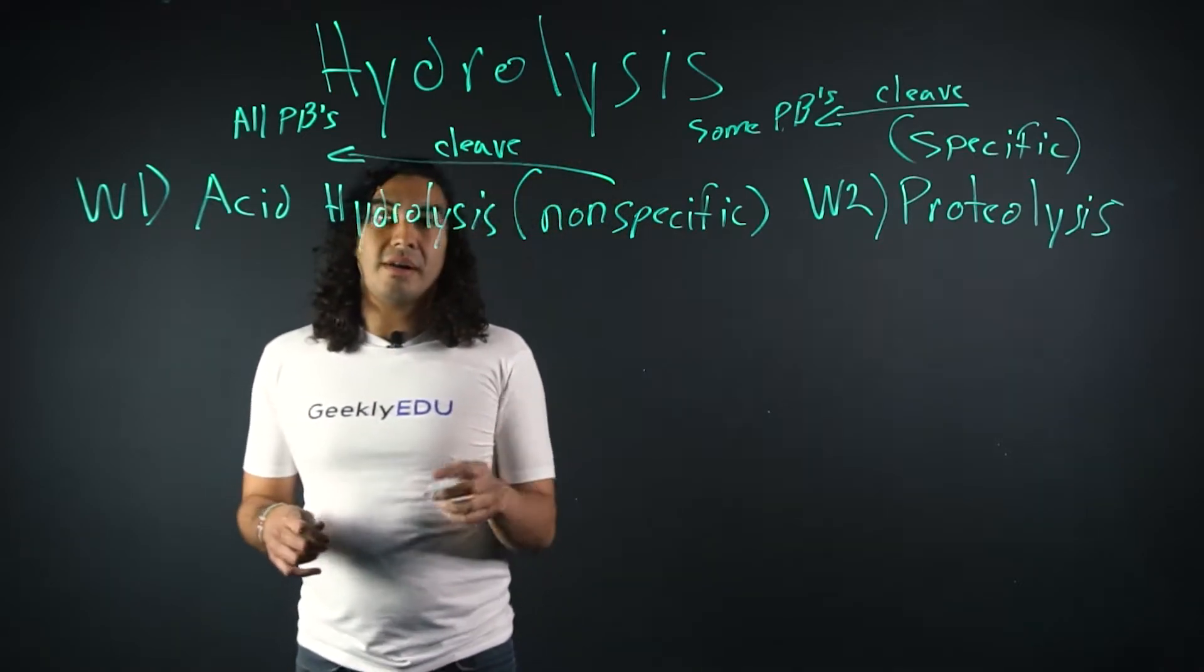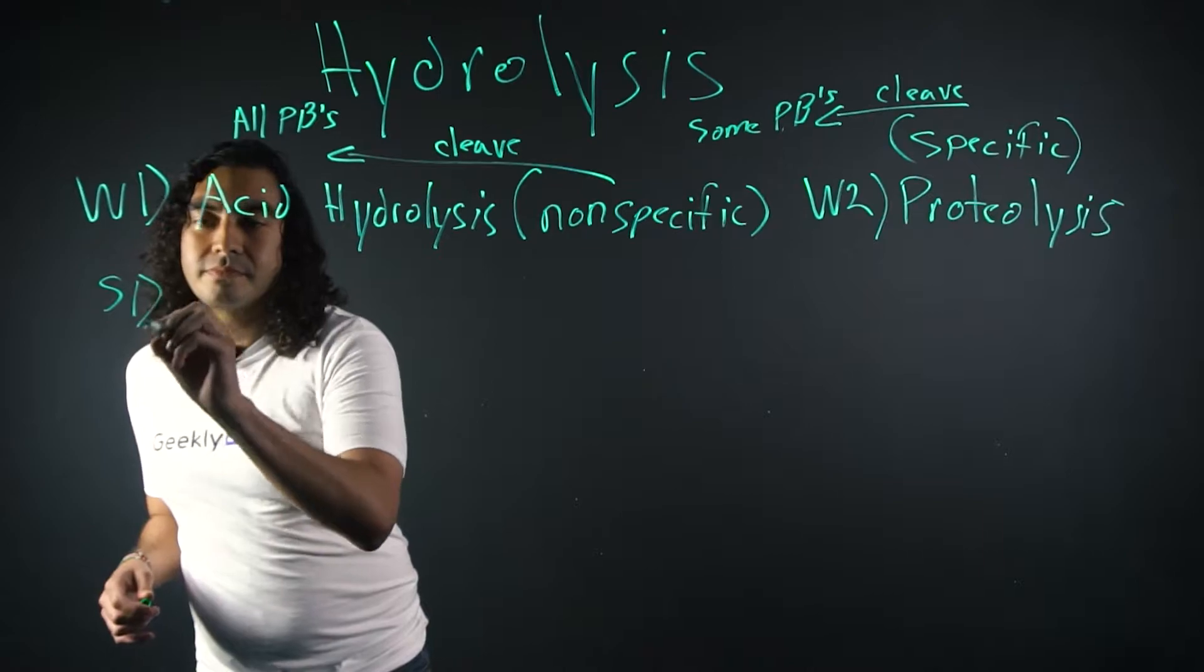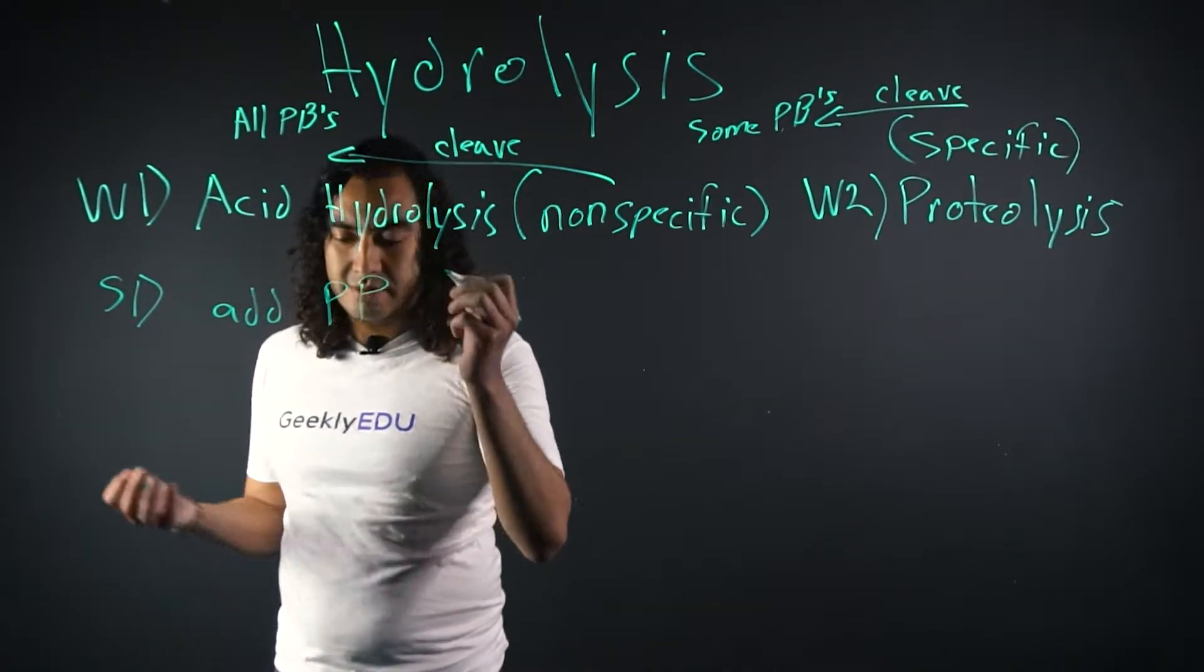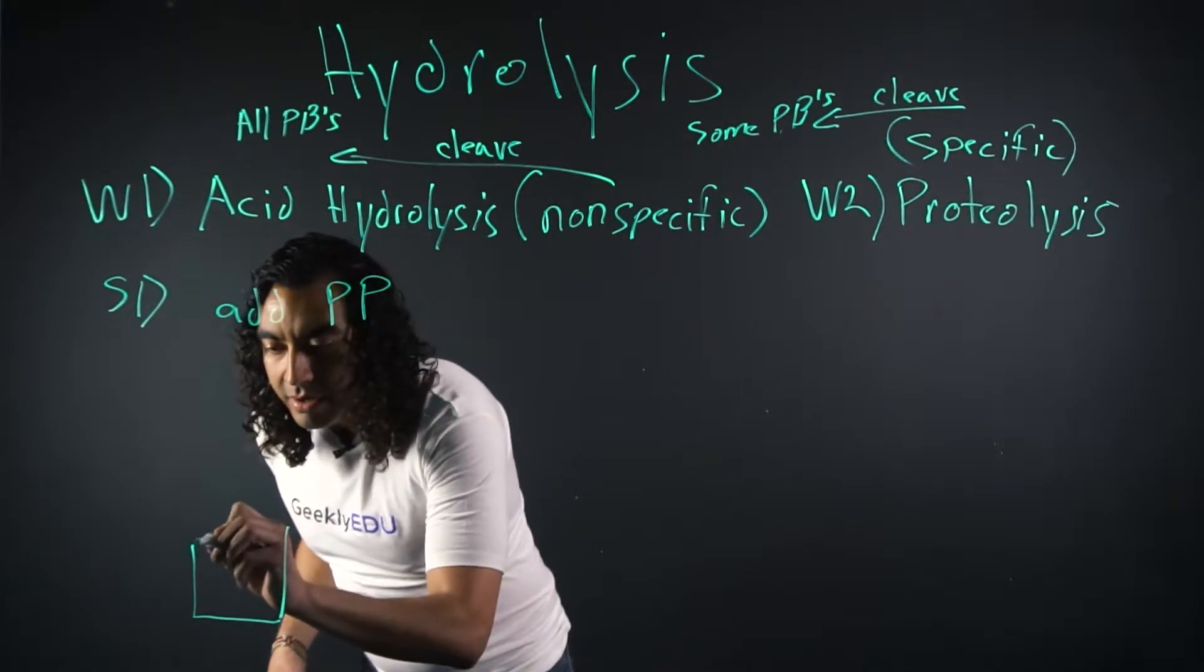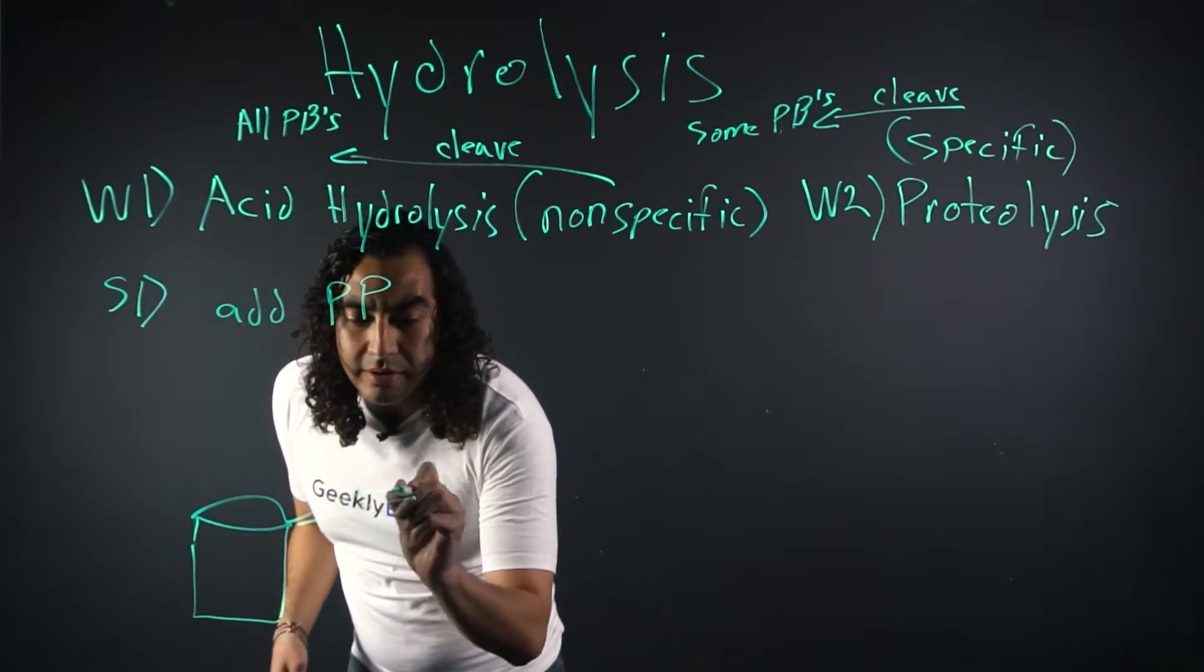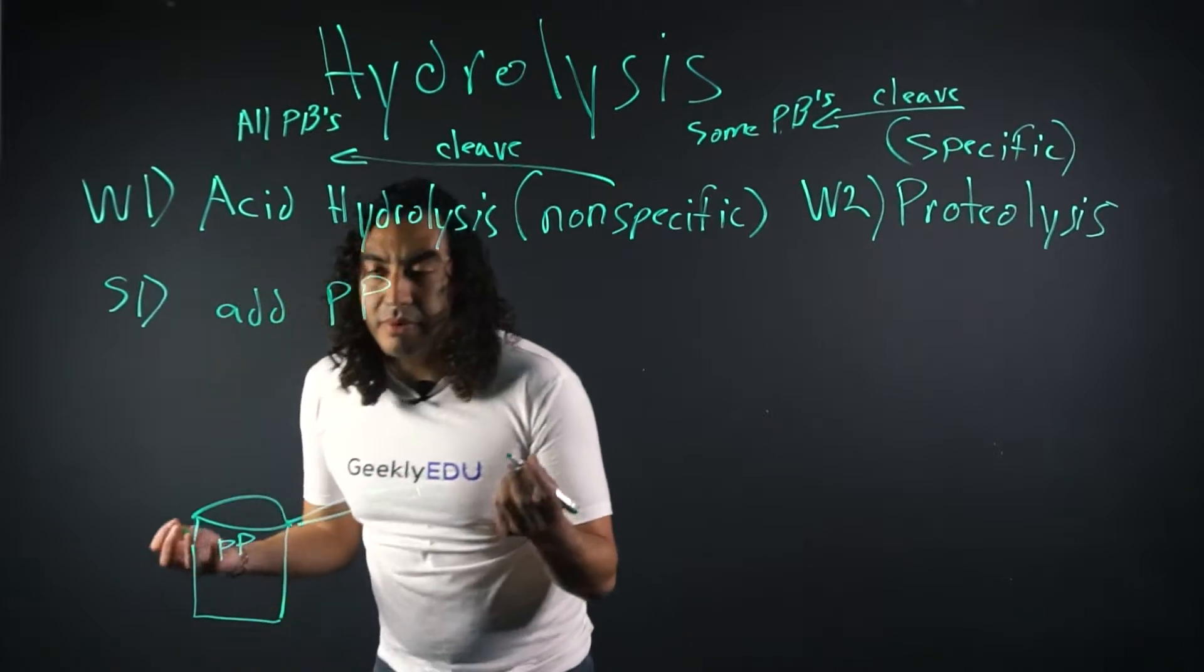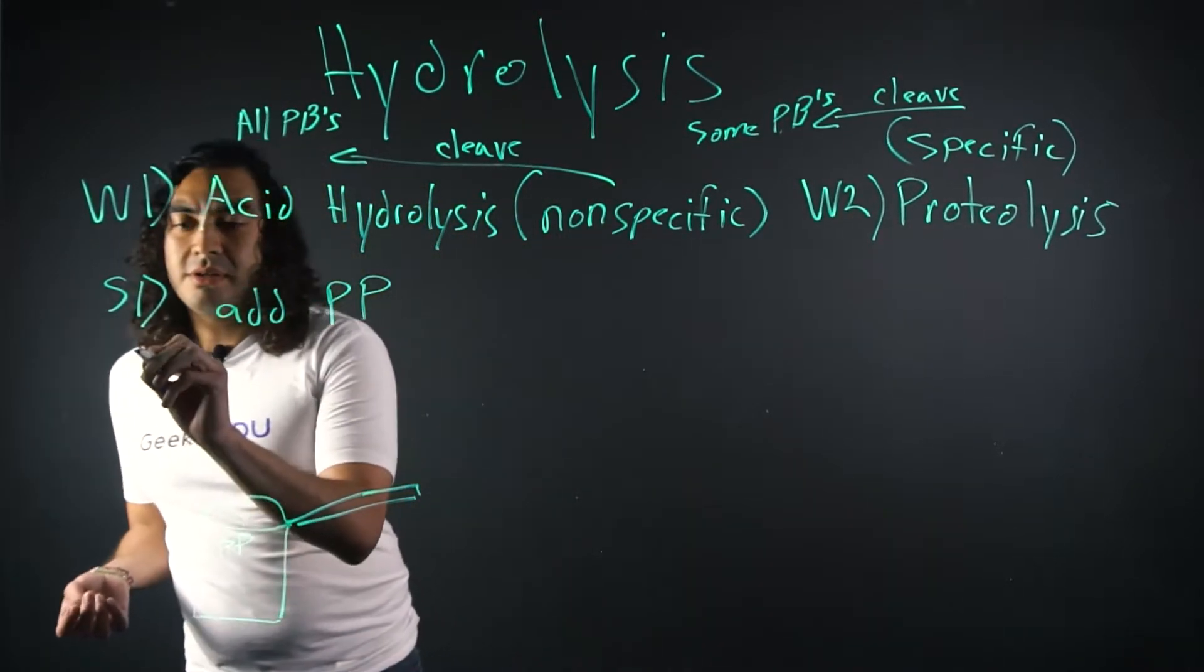So let's go through step one of acid hydrolysis. So step one, pretty simple, pretty obvious. You have to add a polypeptide. So let's have a little beaker here, or beaker or a pot, whatever you want to call it. And we're going to add polypeptide. Just going to write PP for polypeptide. So step one, pretty basic.